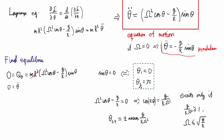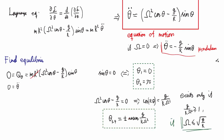So those are the four solutions we have. Next, we need to figure out what their character is — are they stable or unstable equilibria?